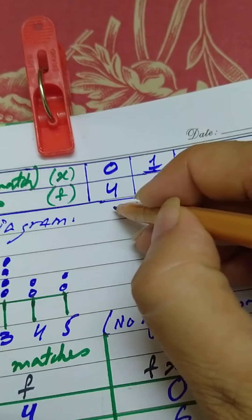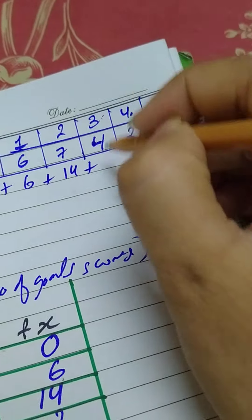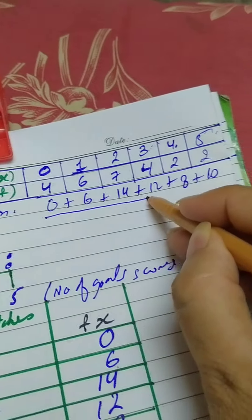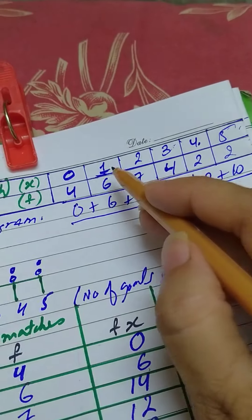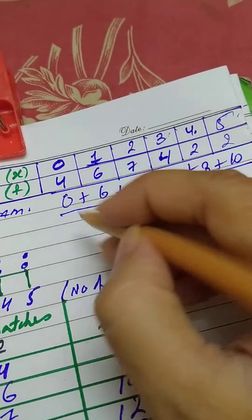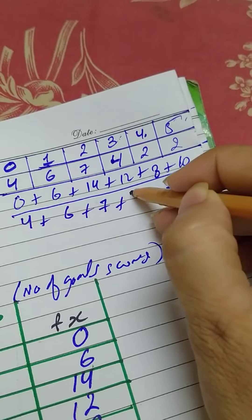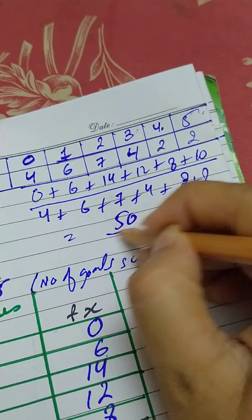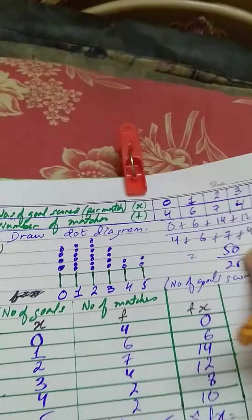You can verify directly: sum of fx = (0×4) + (1×6) + (2×7) + (3×4) + (4×2) + (5×2) = 0 + 6 + 14 + 12 + 8 + 10 = 50. Divided by total matches 4 + 6 + 7 + 4 + 2 + 2 = 25. This gives 50 upon 25 = 2. Same answer either way.